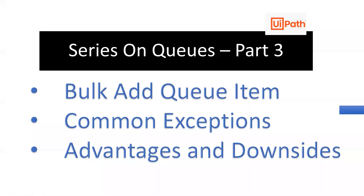In previous videos, we have seen how to upload items into the queue using Add Queue Item, which is one of the activities of Studio. But now, considering a few of the disadvantages that we have with Add Queue Item, we also have one more activity called Bulk Add Queue Item. If the Excel data is very large, then Add Queue Item will take longer time, which is one of the downsides. So in such cases, you can go for Bulk Add Queue Item.